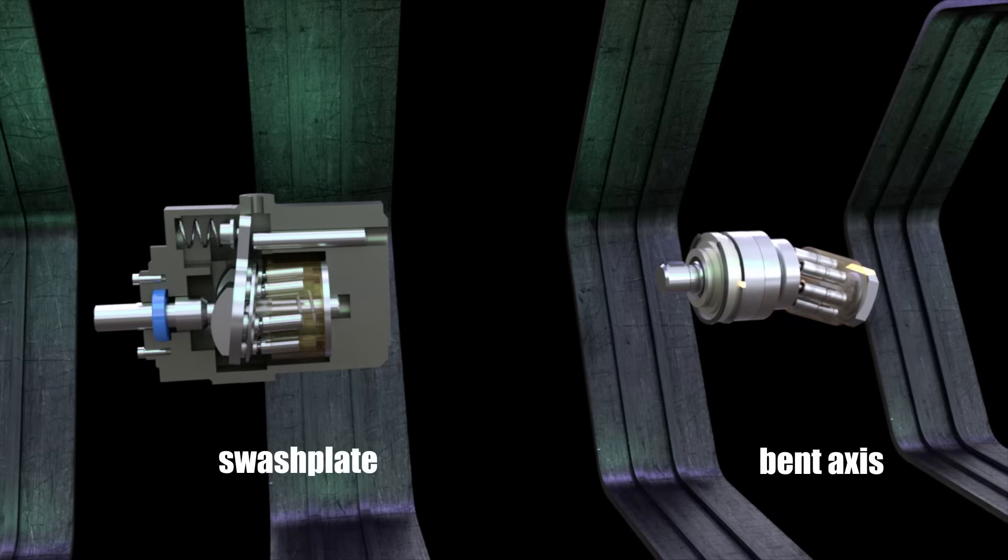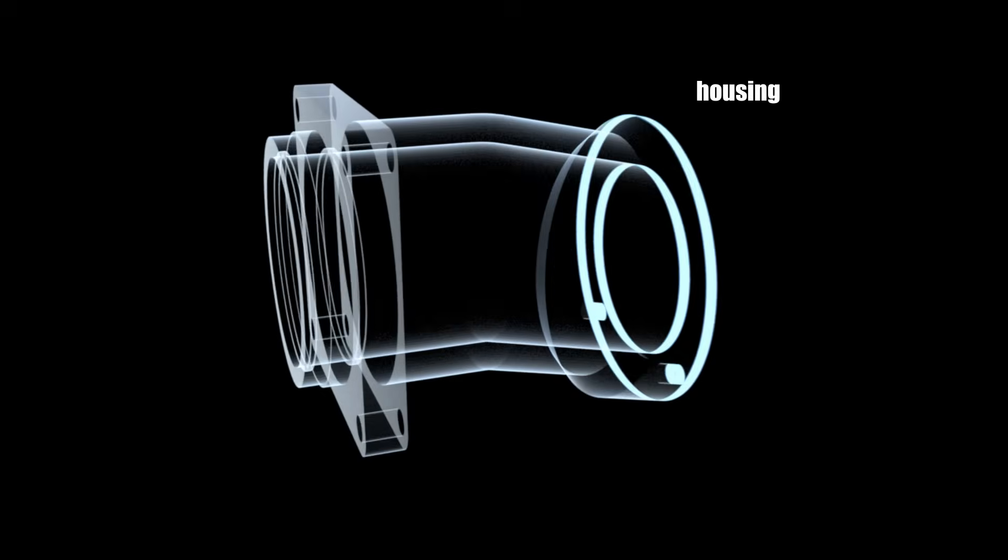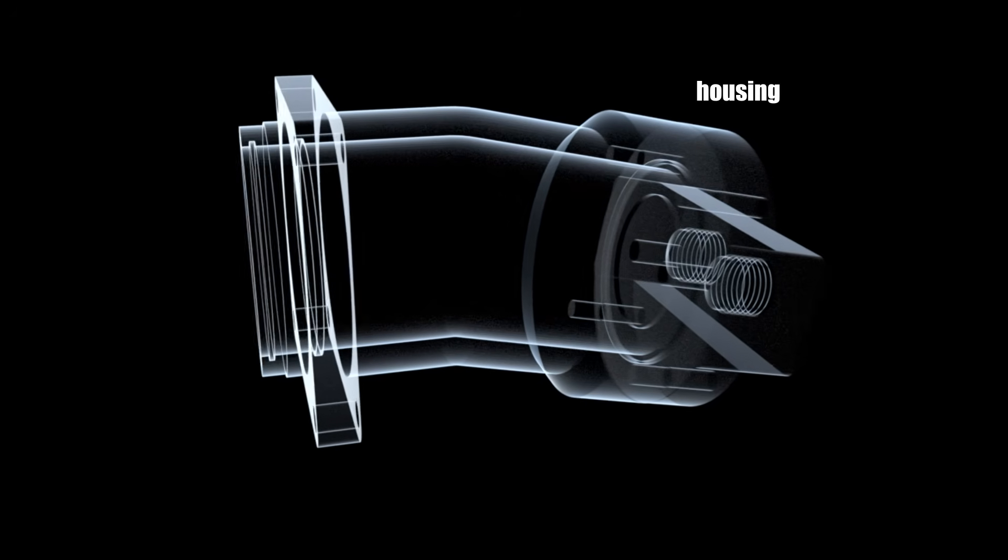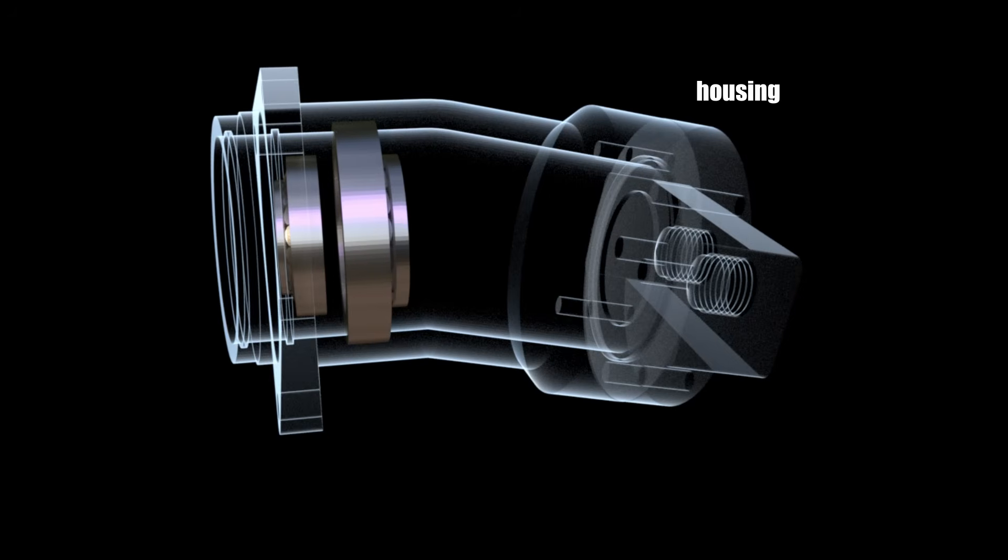Let's try to figure out how these pumps can pump fluid. First, let's check the pump design. Let's take an adjustable bent axis pump as an example. The pump housing has a distinctive curved shape, and its shaft is supported by bearings.